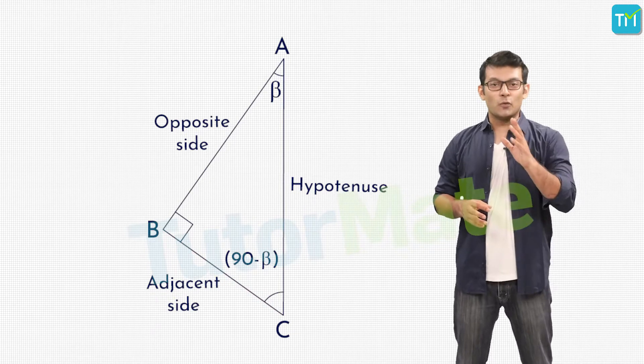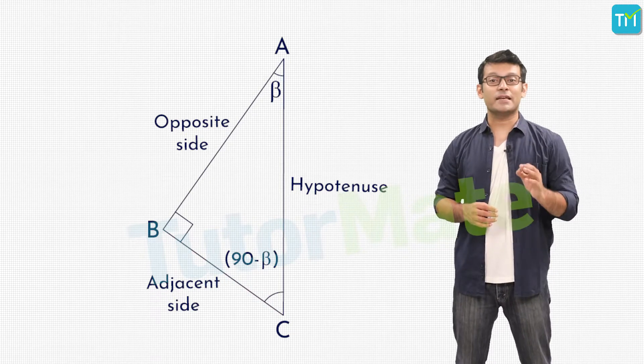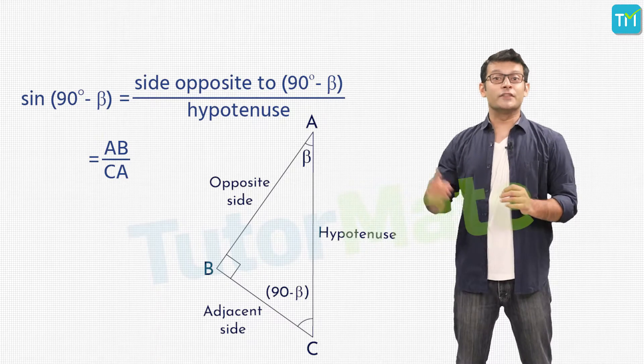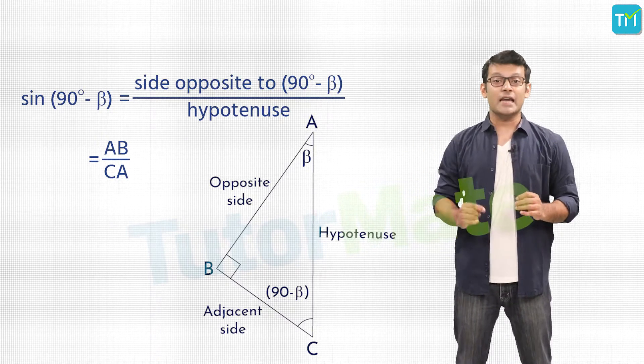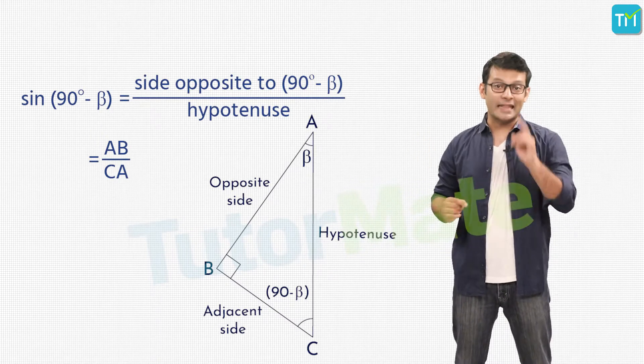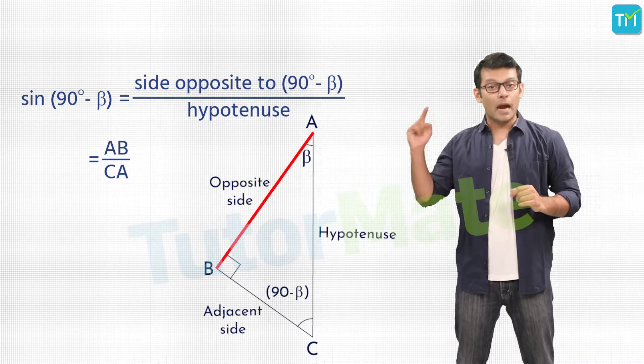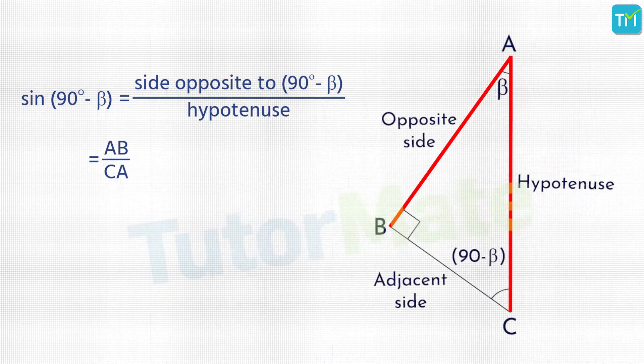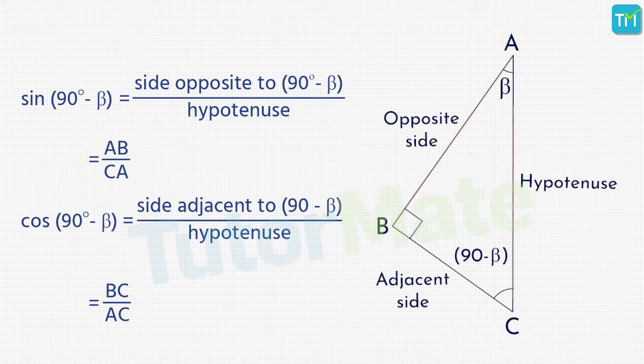Now that we know the sides, let's find the ratios. We'll have sin(90° - β) is equal to the opposite side of angle C upon the hypotenuse, and that is equal to AB upon AC. Then we have cos(90° - β) as adjacent side of angle C upon the hypotenuse, which is equal to BC upon AC.